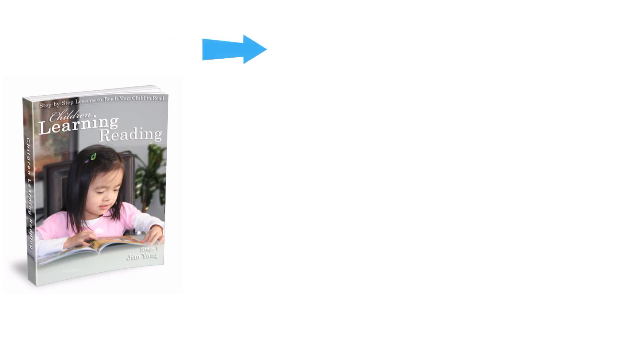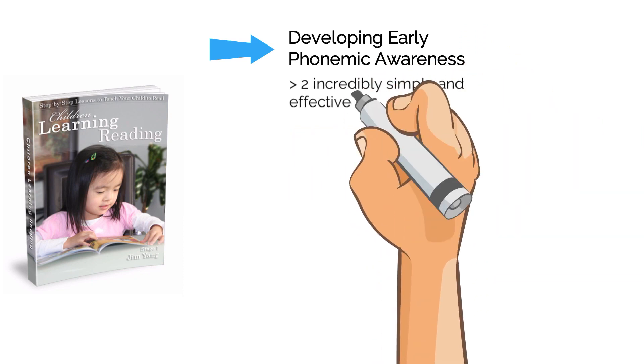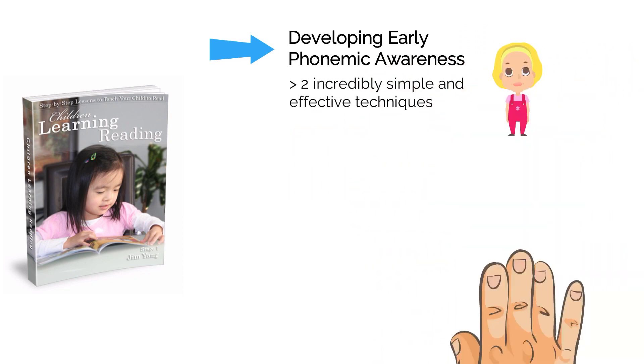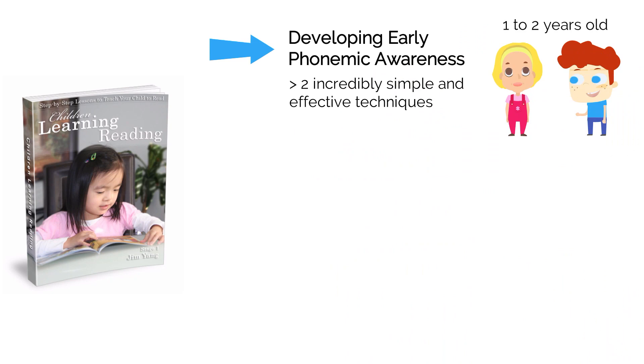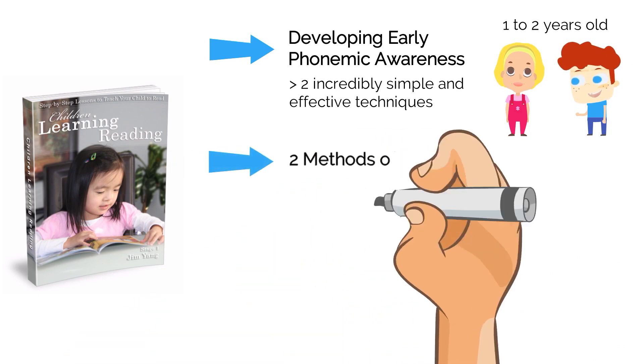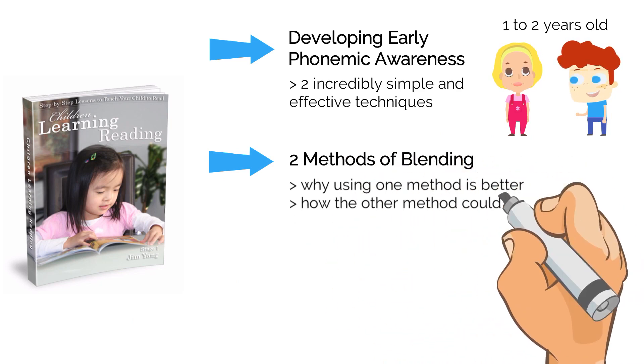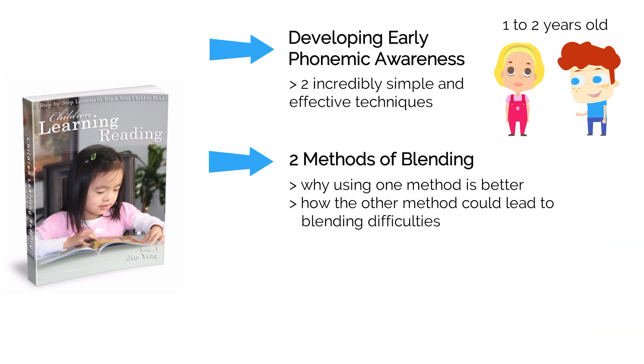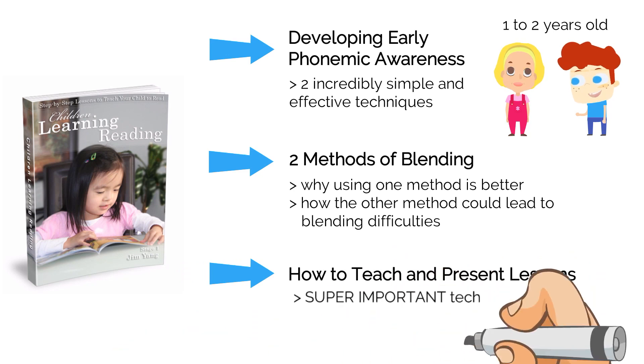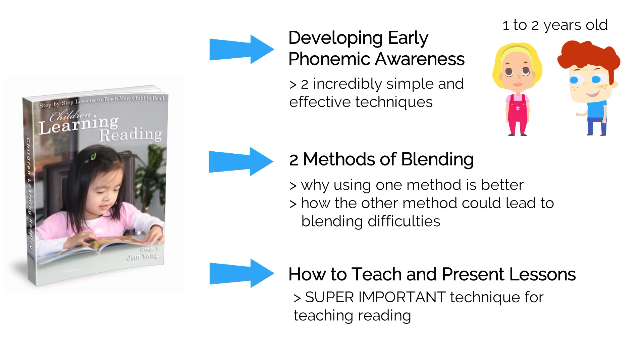I'll let you in on another secret. In the Stage 1 book of my reading program, I have a section titled Developing Early Phonemic Awareness, where I share two incredibly simple and effective techniques with you that enables you to teach your children as young as one to two years old to develop very early phonemic awareness. In the section following that, I'll also show you two methods of blending and explaining why using one method is better, and how the other method could lead to blending difficulties in some children. In another section titled How to Teach Reading and Present Lessons, I show you one super important technique that you must follow when teaching your child to read.